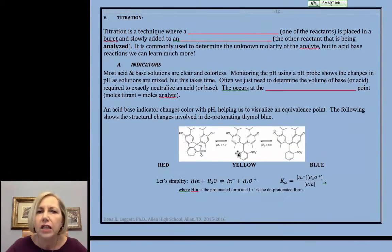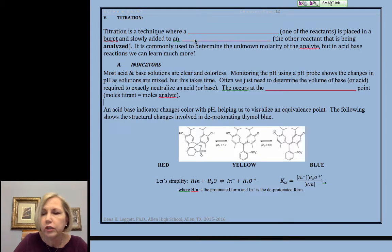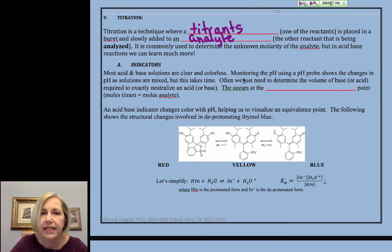We're moving our conversation towards titrations, and as an introduction to that, we want to talk about indicators. All I want to do to start the conversation is to define what a titration is in a little bit more formal terms. Titration is a technique where a titrant, that's one of the reactants, is placed in a burette and slowly added to an analyte. That's the other reactant, the one that we're analyzing.